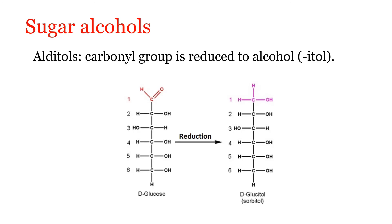The second sugar derivative is sugar alcohol. Monosaccharides upon oxidation yield acids, and monosaccharides when they are reduced yield alcohols. These alcohols are called alditols. Here, the carbonyl group is reduced to an alcoholic group. When glucose is reduced, the CHO group is converted to CH2OH — another primary alcoholic group — and this product is called glucitol. The other name of glucitol is sorbitol. Since it is an alcohol, it ends with '-ol'. So when glucose is reduced, we get sorbitol or glucitol.